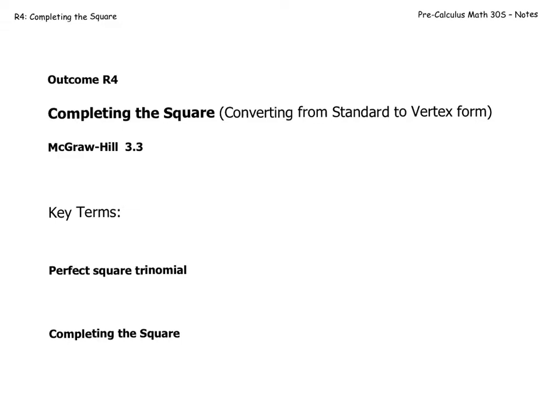Basically, what that is, is we're going to convert the quadratic from standard form to vertex form. It's in section 3.3 in your textbook. A couple of key terms is a perfect square trinomial. Hopefully you remember what that means from last year when we learned how to factor. We're going to review it right away anyways. And completing the square. So that's the process of converting from standard to vertex form.